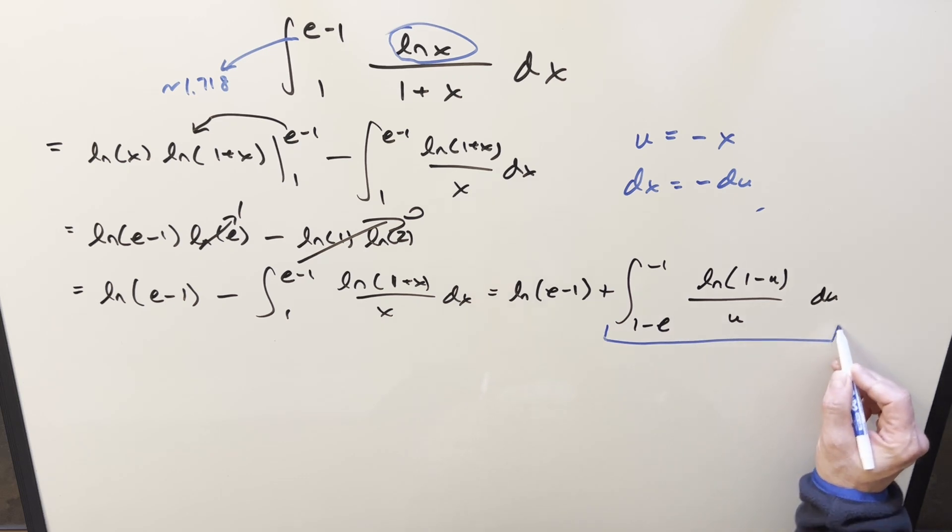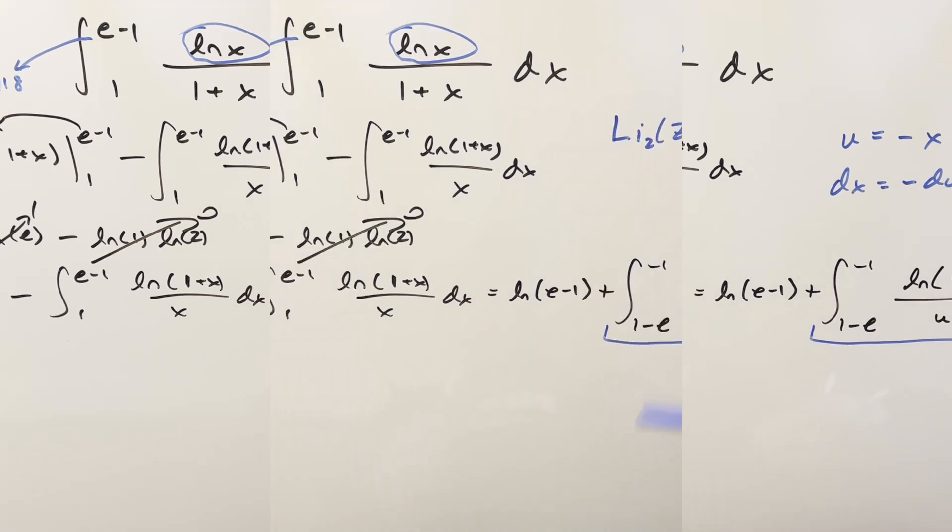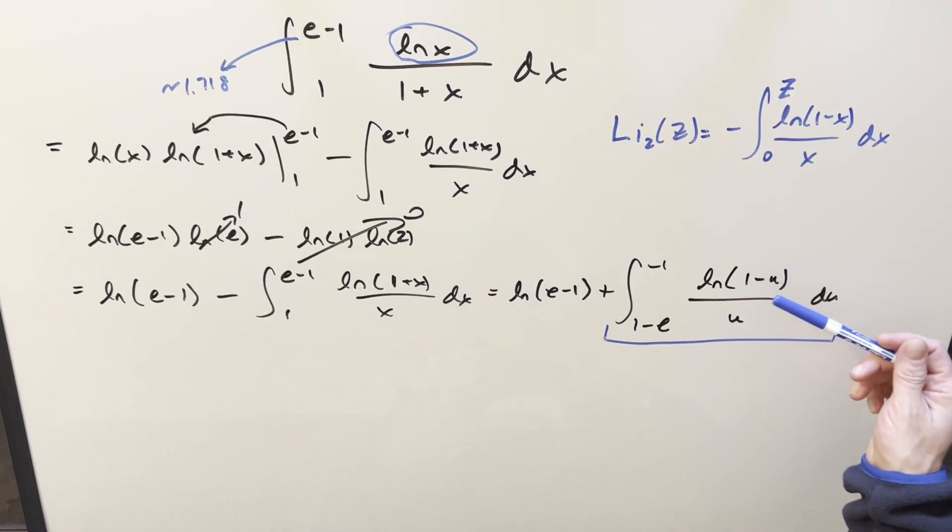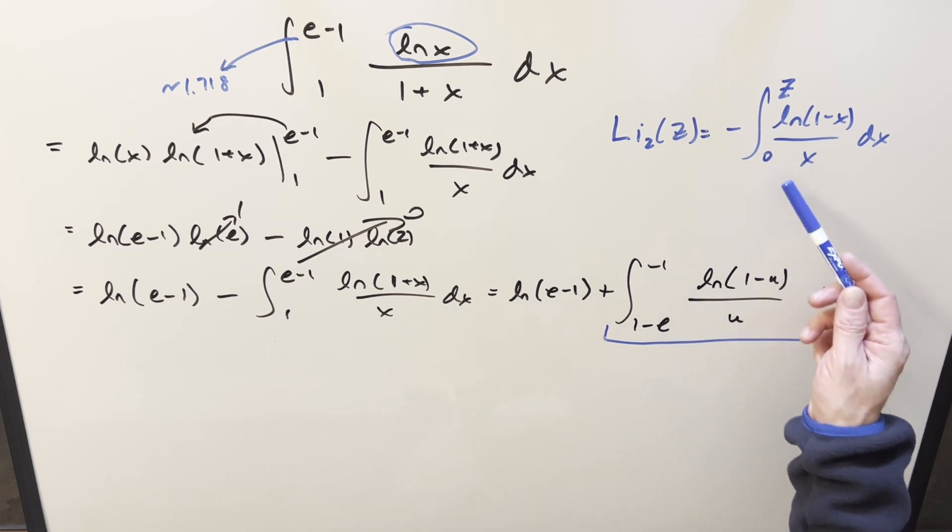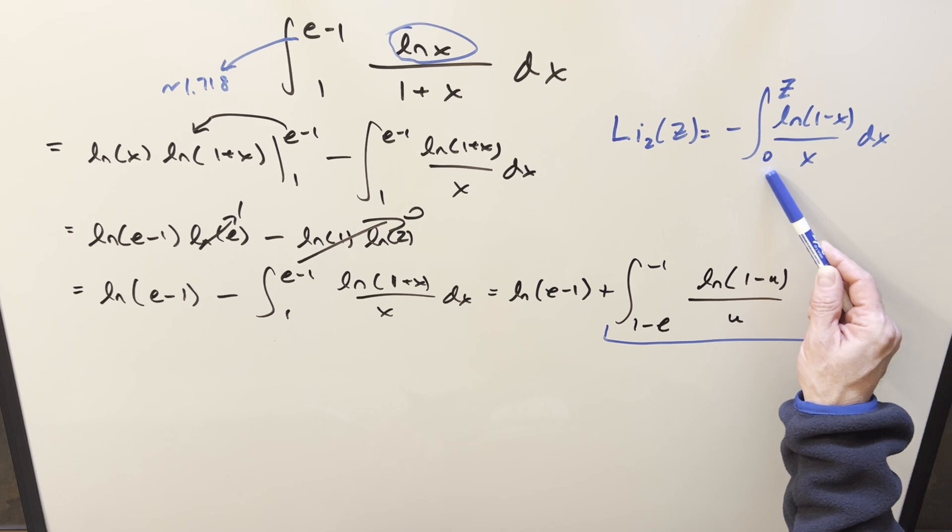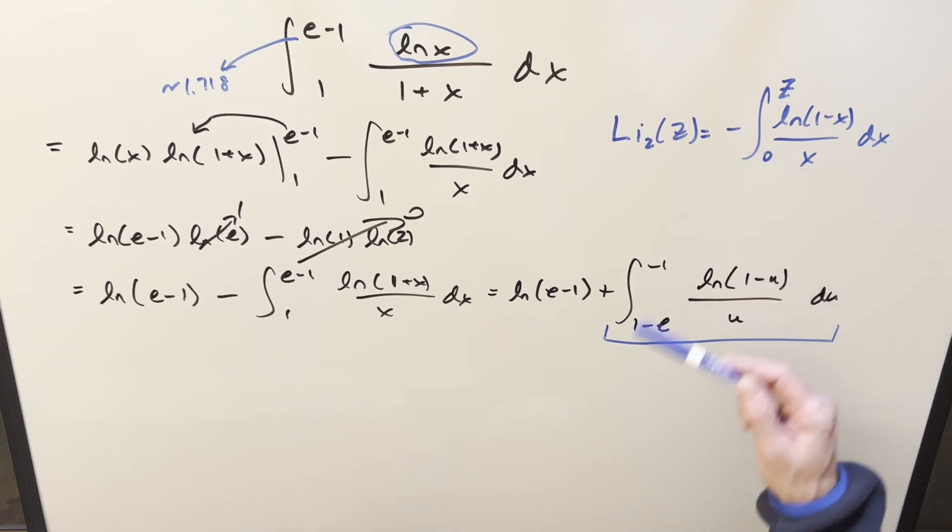So you'll see comparing to our definition here, the integrand is the same, just a different variable. One key difference though, is we've got 0 here for the lower bound. And we also have a minus here, but a minus is going to be easy to deal with. But we want to get this set up where we've got a 0 in the lower bound, just like this.